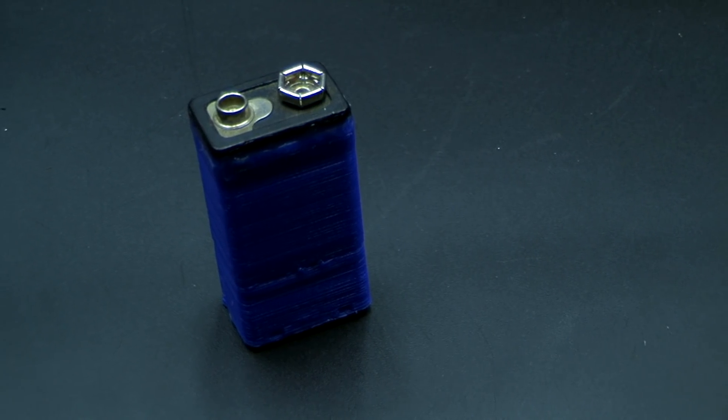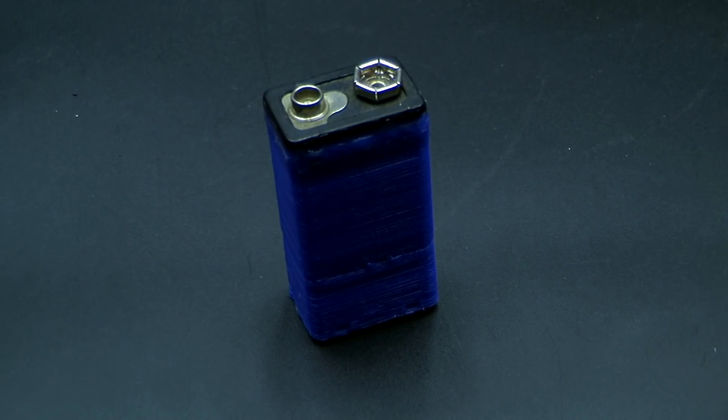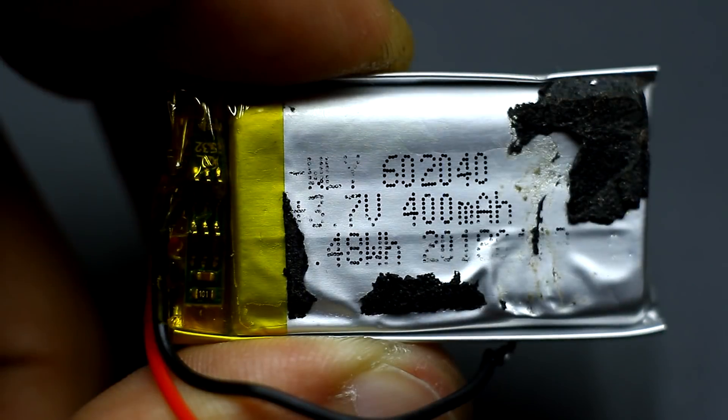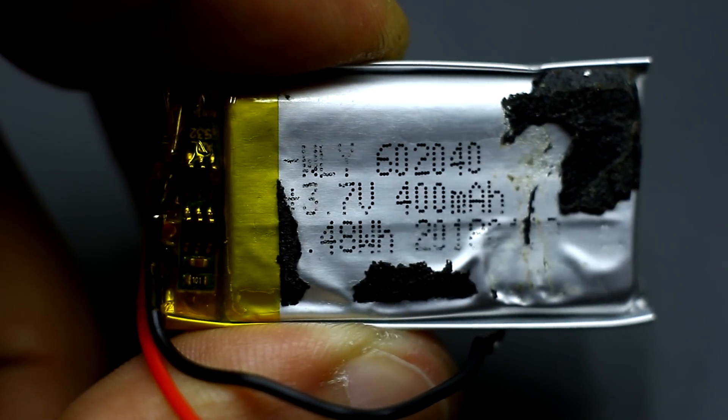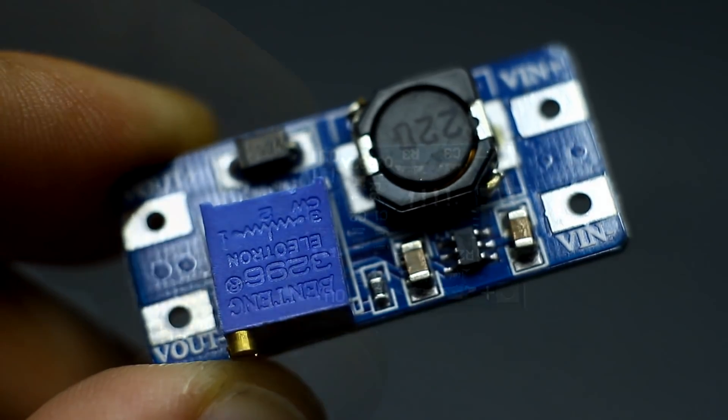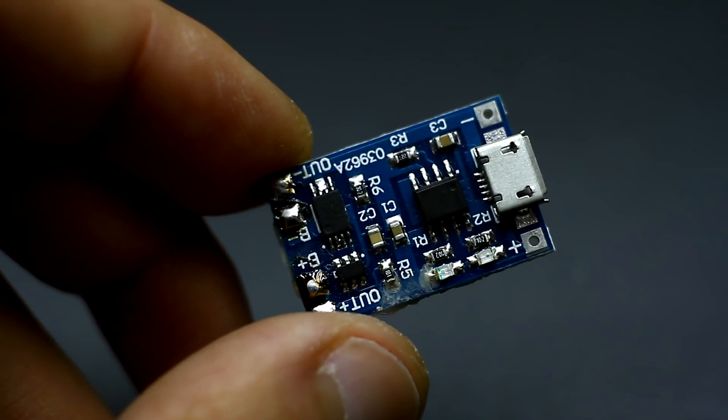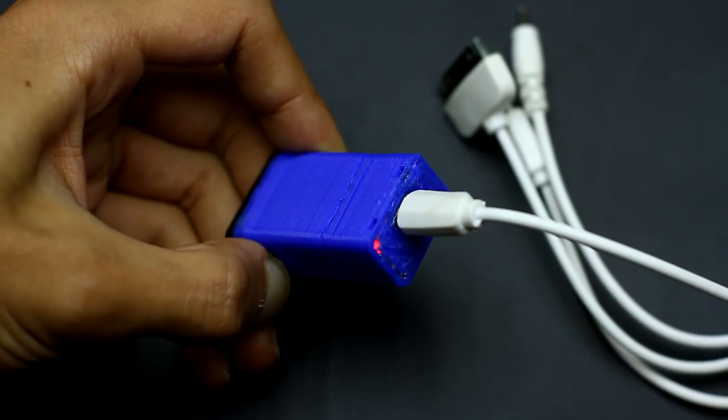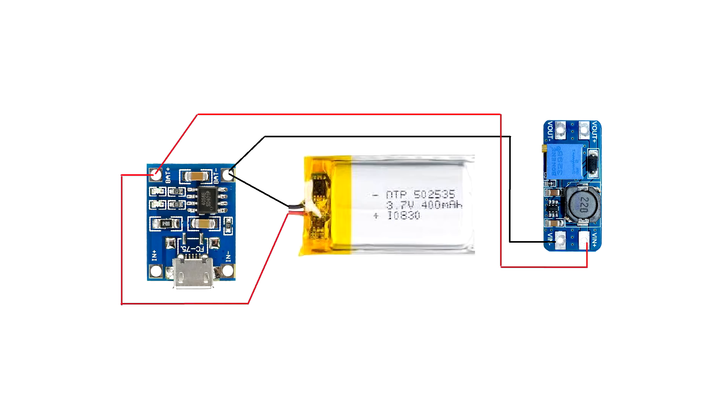In order to feed multimeter from a lithium battery, we need to find a compact battery, for example, 400mAh, as well as a converter and charge port, which will charge battery from the USB port. As can be seen from the block diagram, the converter is always connected to the battery and consumes some current from it, even in idle mode.